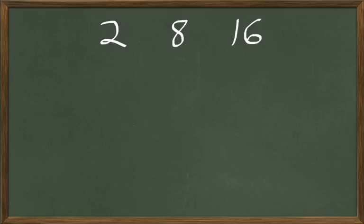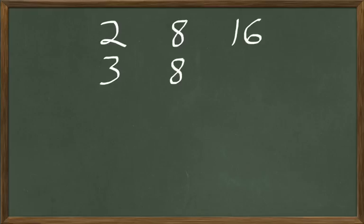In the next problem, we've got 3 boys fishing and they each catch 8 fish. Each one manages to catch the same number as the other. So how many fish did they all catch at the end of the day? What 2 numbers do we multiply? We'd multiply 3 times 8 because we've got 3 boys and each boy caught 8 fish. 3 times 8 are 24, so 24 fish.